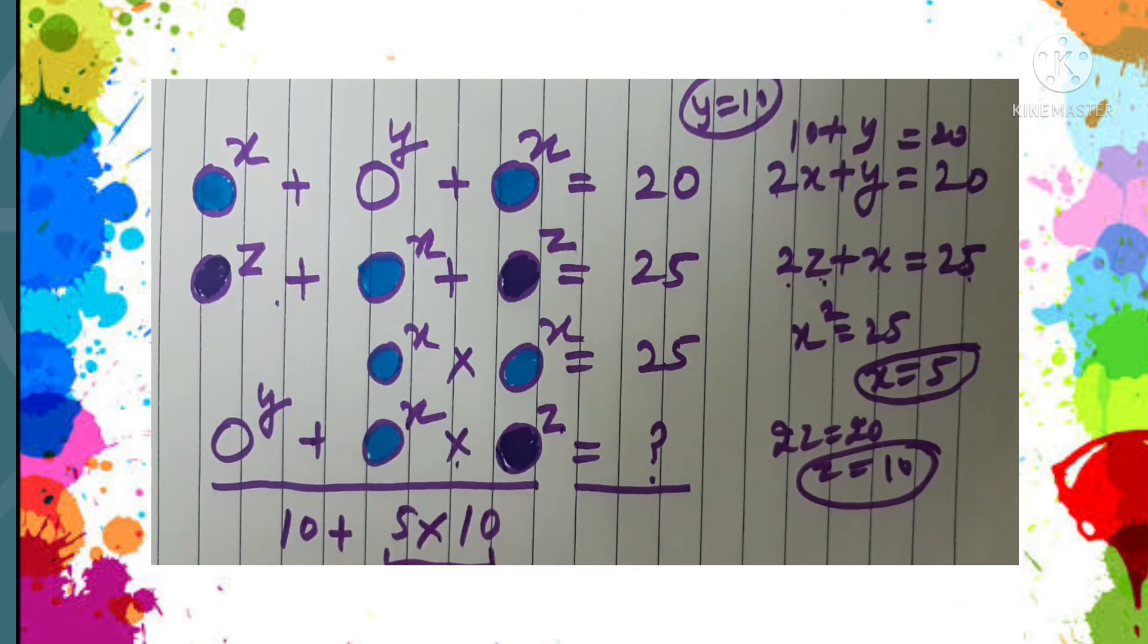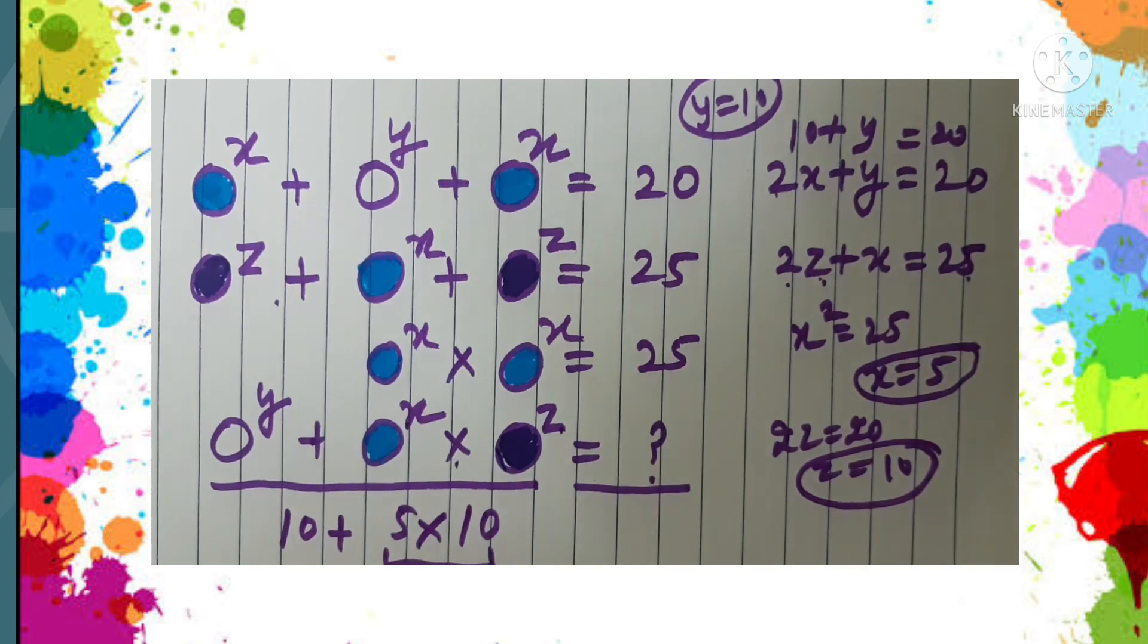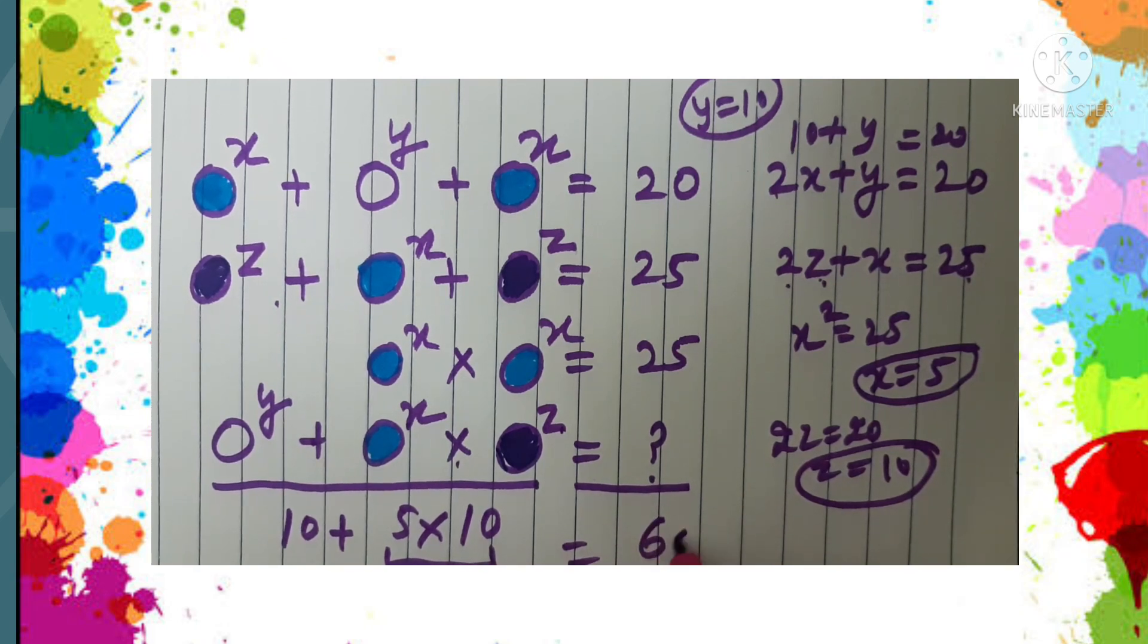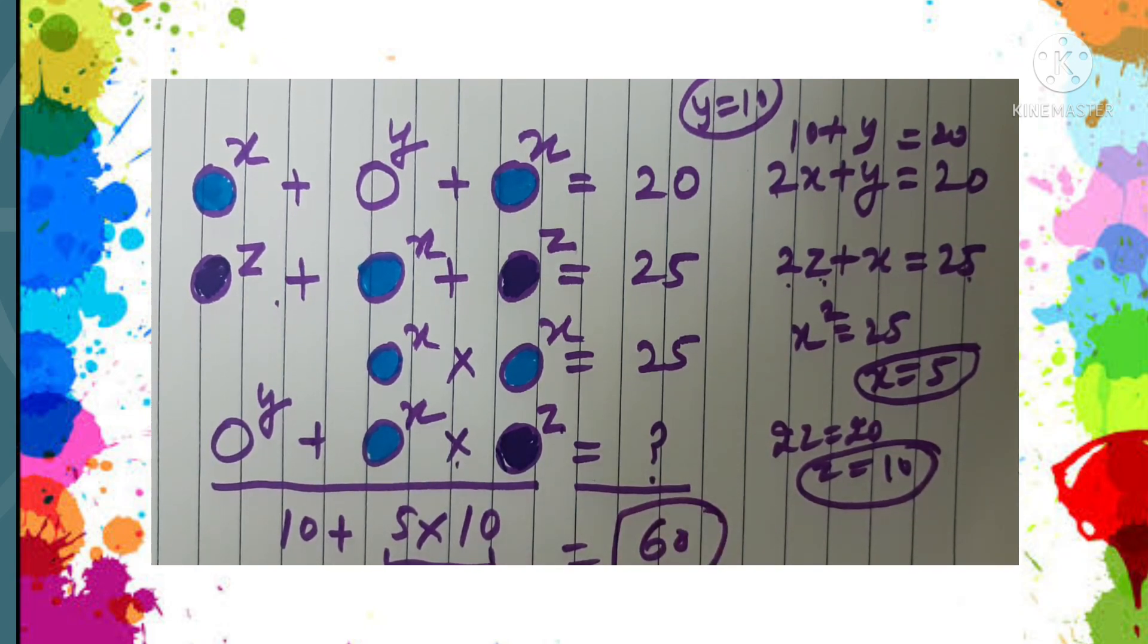We know that first we need to do multiplication, and this will give us 10 into 5, which is 50. 50 plus 10 is 60. So the final answer to this question is 60. Isn't it interesting?